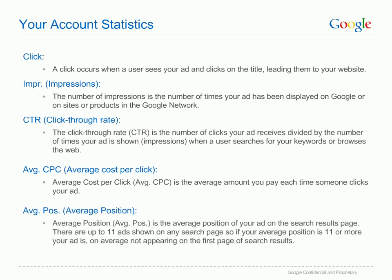Average position refers to the average position of your ad on a search result page. Position 1 is the highest on the first page, and there are up to 11 ads shown on any search page, so if your average position is 11 or more, your ad is on average not appearing on the first page of results. An average position of 1.7 means your ad usually appears in positions 1 or 2. Average ad positions are not fixed and vary dependent upon your ad performance.